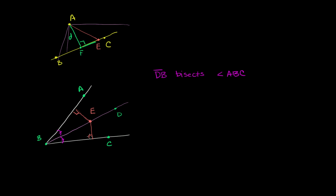They're both right triangles. So they actually have two angles in common, which means they have three angles in common — it constrains what the other angle would be. And they also have this side in common. BE is the hypotenuse of both of these right triangles.